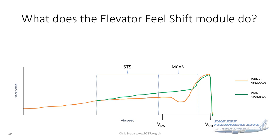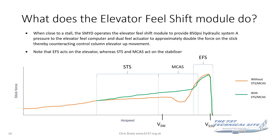One other thing to mention is elevator feel shift. It actually applies at the top end of the stick force curve. When close to a stall, the SMYD operates the elevator feel shift, providing 850 PSI A system pressure to the elevator feel computer and the dual feel actuator to approximately double the force on the stick, counteracting control column elevator-up movement. That's what you see where the gradient starts to increase quite significantly before the stall break. Elevator feel shift acts on the elevator, but STS and MCAS both act on the stabilizer.